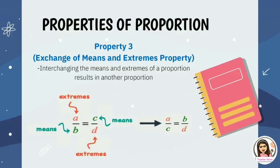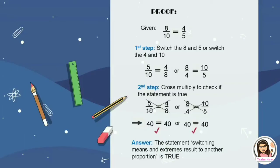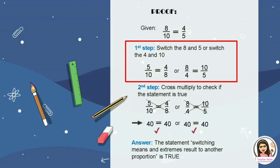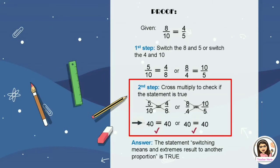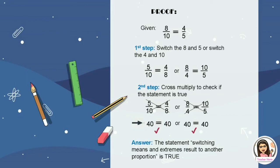Property 3: the exchange of means and extremes. Interchanging the means and extremes of a proportion results in another proportion. So a over b equals c over d will give a over c equals b over d. Let's check with 8 over 10 and 4 over 5 to see if it remains a proportion after exchanging means and extremes. First step: switch 8 and 5, or switch 4 and 10, giving 5 over 10 equals 4 over 8, or 8 over 4 equals 10 over 5. Second step: cross multiply to verify. 5 multiplied by 8 equals 40, and 10 multiplied by 4 equals 40. Therefore, switching means and extremes results in another proportion — the statement is true.